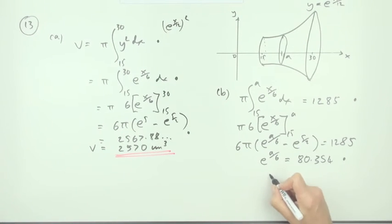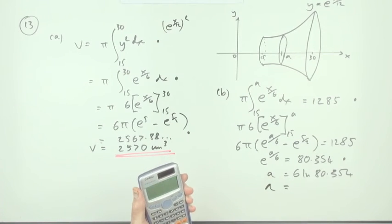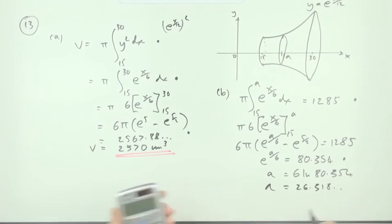So to get to a, there's two things to get rid of. Get rid of the e, so it'll be ln 80.354, and get rid of the divide by 6, which will be 6 times it. So a should be 6 times that, which gives you 26.318 and so on, so I'll call that 26.3.